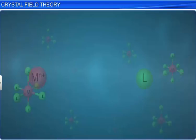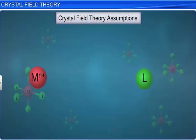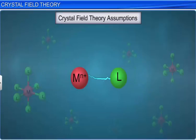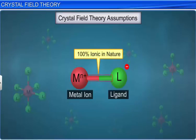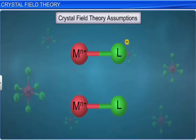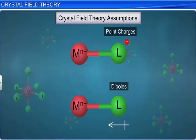The crystal field theory is based on certain assumptions. The interaction between the metal ion and the ligand is purely electrostatic, that is, the metal-ligand bonds are 100% ionic in nature. Negative ligands are treated as point charges and neutral ligands are treated as dipoles. Thus, the bonding in the complex may be an ion-ion interaction or an ion-dipole interaction.